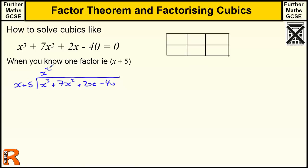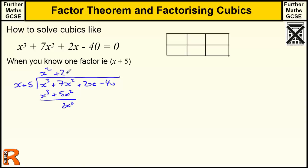When we multiply x² by x we get x³, but we also have to multiply the 5 by the x², which gives us 5x². So we're missing 2x² because we need to make 7x². To make the 2x², we need to multiply x by 2x, and when we multiply x by 2x we get the 2x².